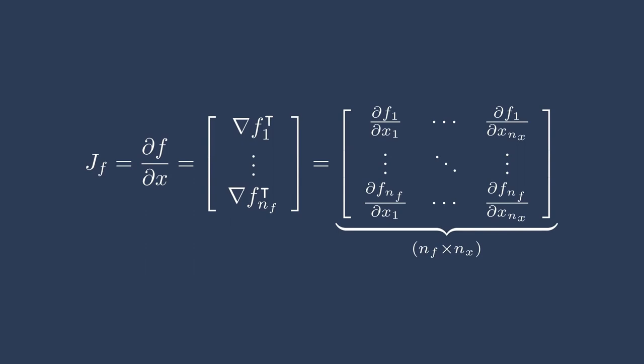A Jacobian is an array of partial derivatives. In the case when f is a scalar and x is a scalar, partial f partial x is just a scalar, so the Jacobian is one by one. However, in the most general sense, a Jacobian is of the shape n_f by n_x, or the number of functions of interest by the number of inputs. You can also think of this as the number of outputs by the number of inputs.